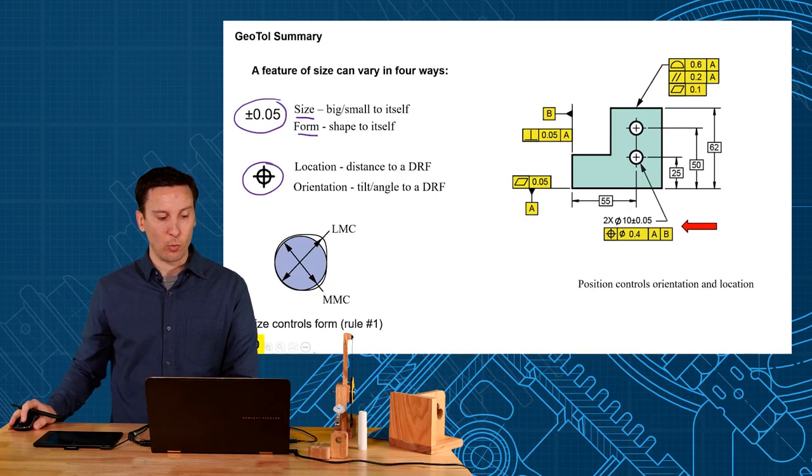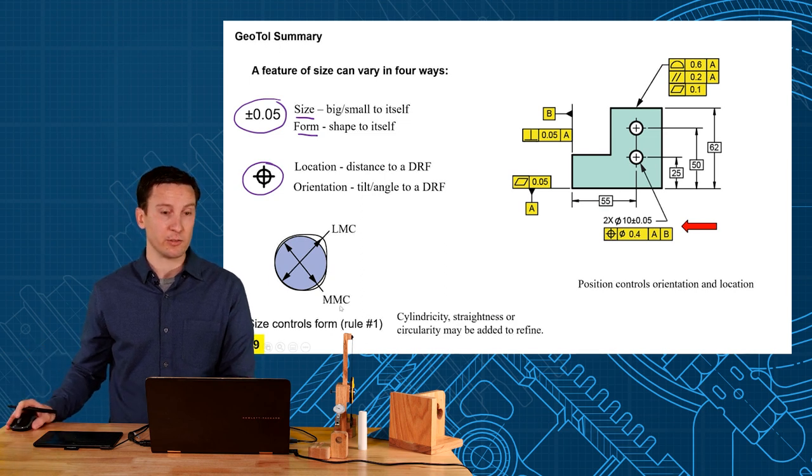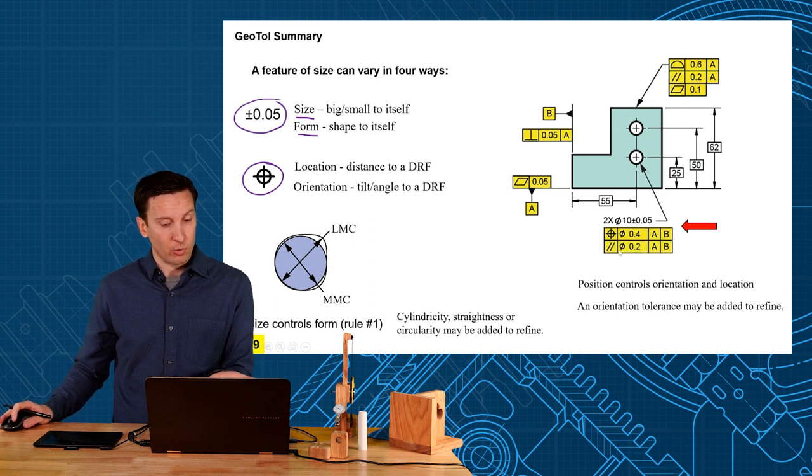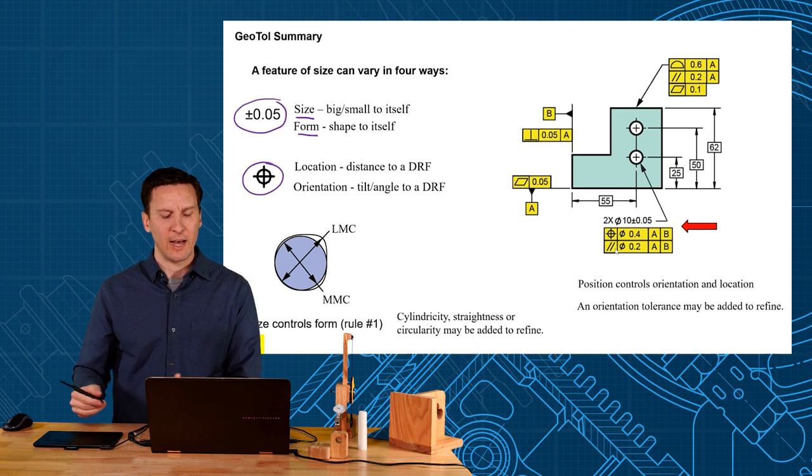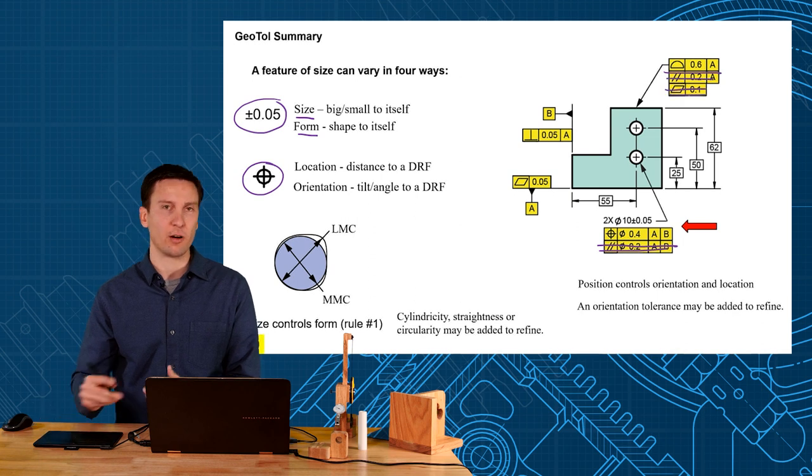So size controls form through rule number one MMC and LMC limits there. You could refine if you want with a cylindricity or straightness usually not necessary and then position tolerance controls your location orientation but you can refine if you want to by going tighter and I would say that most of these are unnecessary. We don't really need parallelisms and flatnesses because our location tolerance does everything.